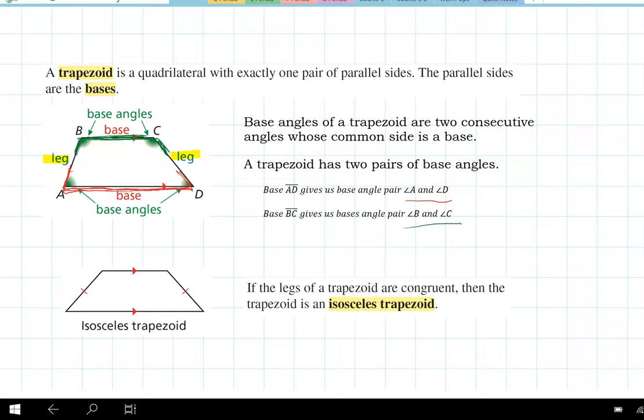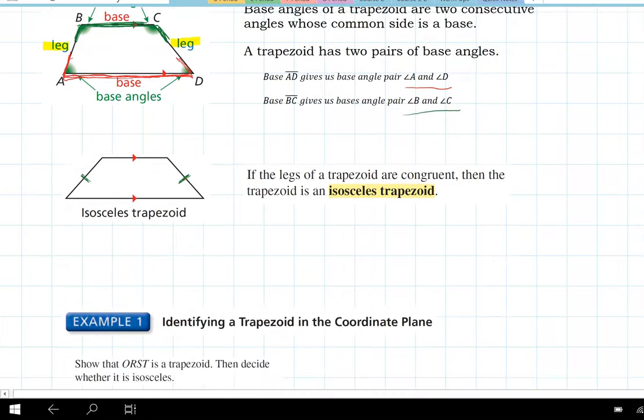Now an isosceles trapezoid is a special kind of trapezoid where the legs are congruent. You see that this leg is congruent to this leg. And then we learn some special things about isosceles trapezoids.